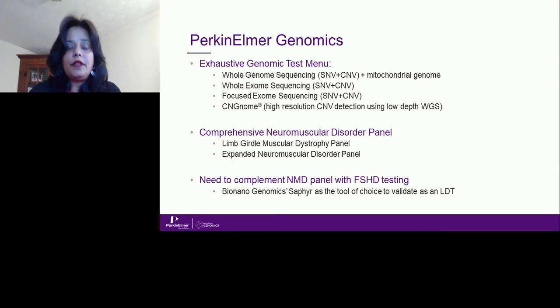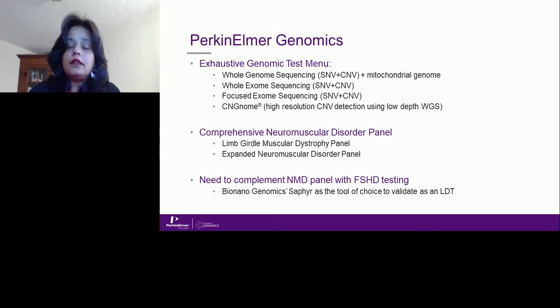PerkinElmer Genomics has a very exhaustive genomic test menu, which includes whole genome sequencing where we interrogate sequencing variants, copy number variants, and the mitochondrial genome. We also have whole exome sequencing, focused exome sequencing for reporting sequencing and copy number variants, and a low-pass whole genome sequencing test we call copy number genome for high-resolution CNV detection.